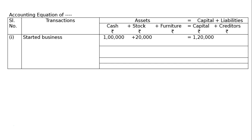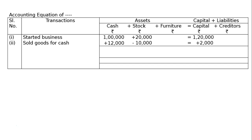Second transaction: sold goods worth ten thousand for twelve thousand — two thousand is profit. Cash will be increased by rupees twelve thousand since goods are sold for cash. Stock decreases by rupees ten thousand (the cost of goods sold), and capital increases by two thousand due to profit.